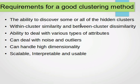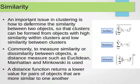Clustering methods need to be able to handle high dimensional data, and they also need to be scalable, interpretable, and usable. Measuring similarity is a very important issue in clustering — we need to determine the similarity between two objects so that clusters can be formed from objects with high similarity within clusters and low similarity between clusters. To measure similarity or dissimilarity between objects, a distance measure such as Euclidean, Manhattan, or Minkowski is used.